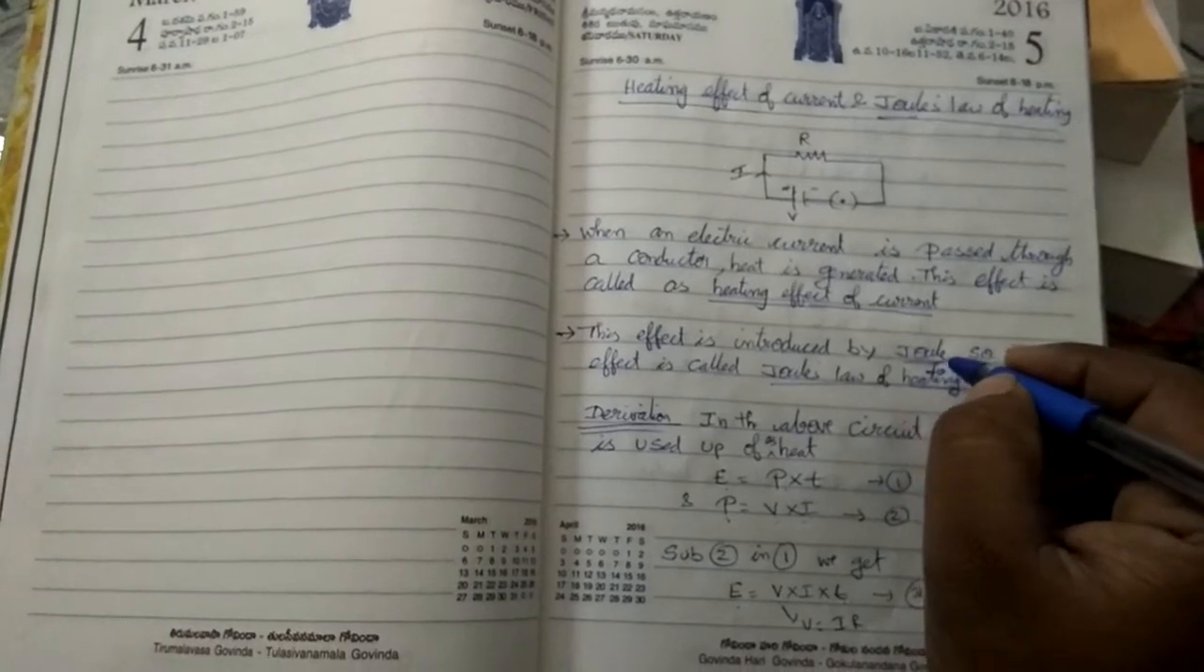The first person who introduced this effect is called as Joule's law of heating. The person name is Joule, he is a scientist who invented this effect.